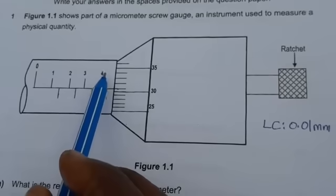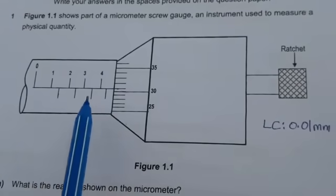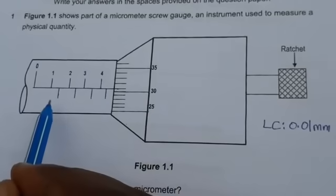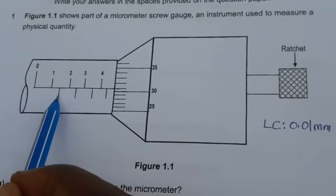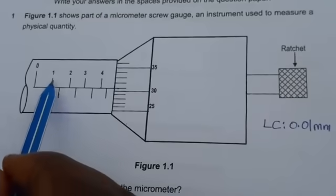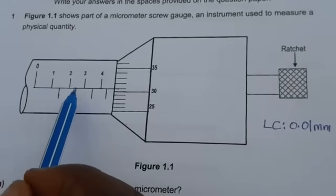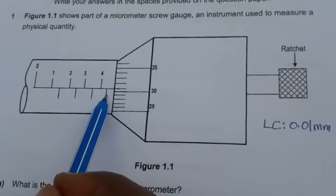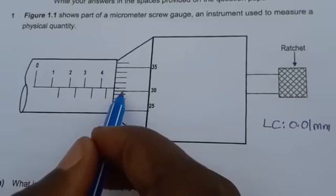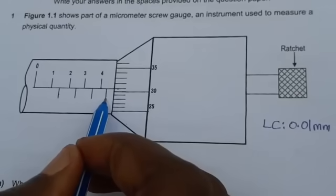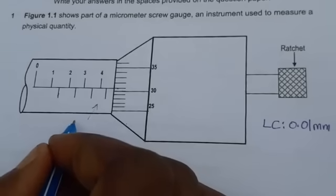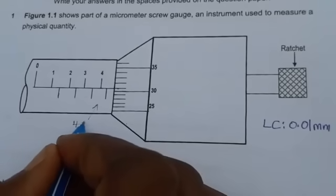This instrument is in millimeters. We have 0, 1, 2, 3, 4 millimeters on the sleeve reading. The first thing we're going to do is take the measurements of the sleeve scale. We have 0, then 1. This demarcation or graduation that is down here indicates the 0.5. So we have 0, 1, 0.5, 2, 0.5, 3, 0.5, 4, 0.5. This is the last measurement before we go to the thimble reading. So this sleeve reading is 4.5 millimeters.